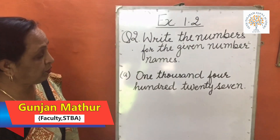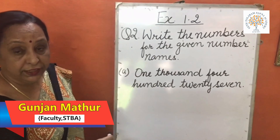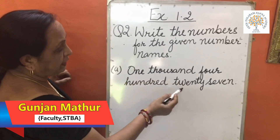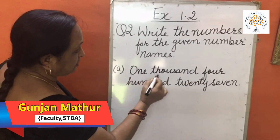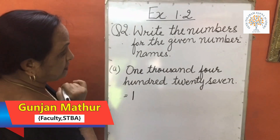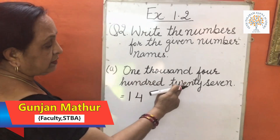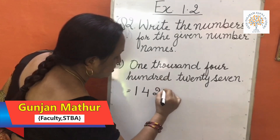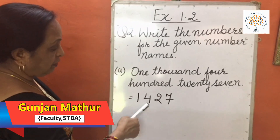Here is the next question. We have discussed writing number names for given numbers. Now, in this question, it is just the opposite — we have to write numbers for the given number names. The first example is one thousand four hundred and twenty-seven. The first part is 1000, so we write 1 at the 1000s place. The next is 400, so we write 4 at the 100s place. And 27 gives us 2 at the 10s place and 7 at the 1s place. So the number is 1427.